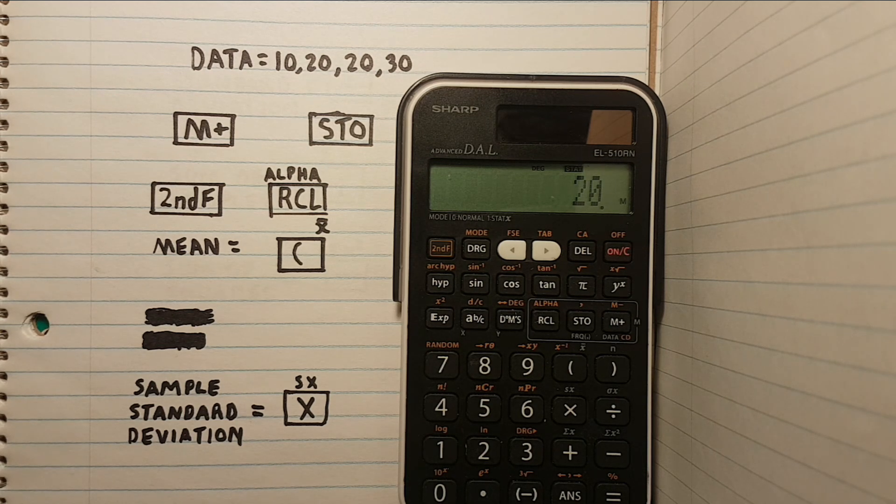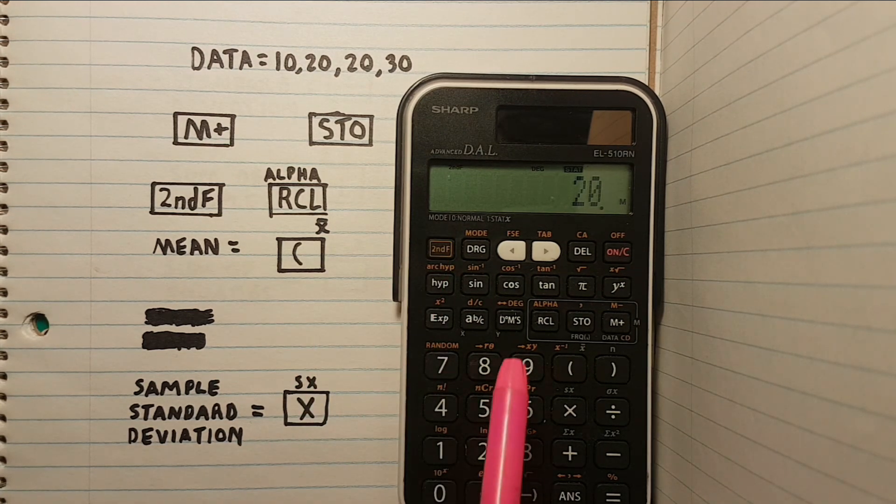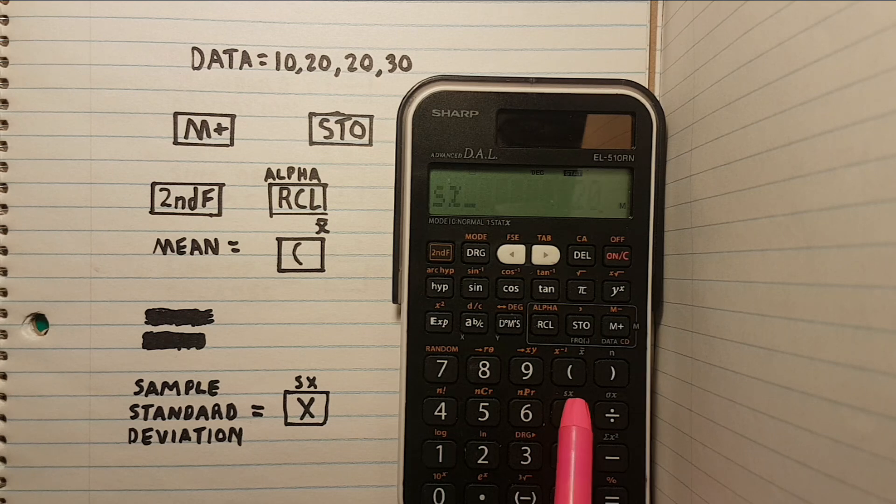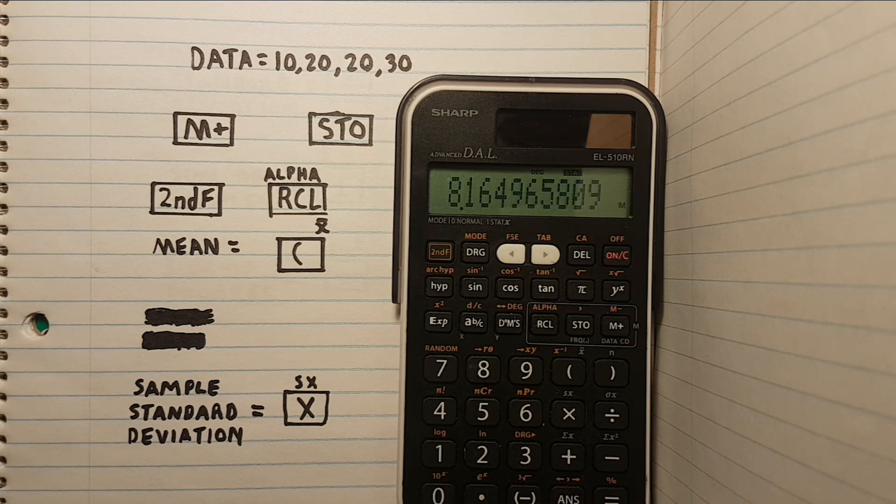Now if we wanted to see our sample standard deviation, we would press second function RCL and then the multiplication key with the SX over top. We then see the SX or sample standard deviation symbol appear on our screen and if we press equals, we get 8.1649, which is the correct sample standard deviation for this data set.